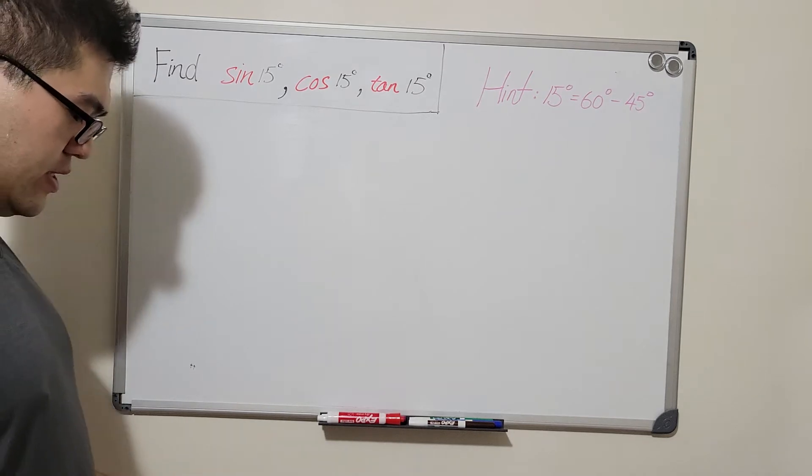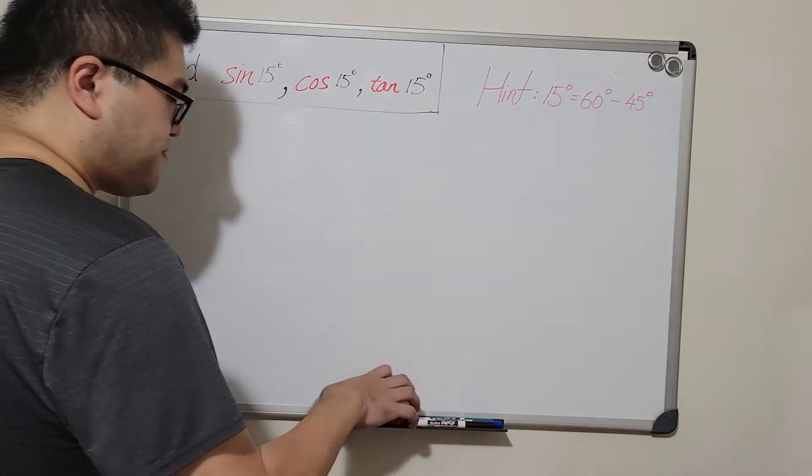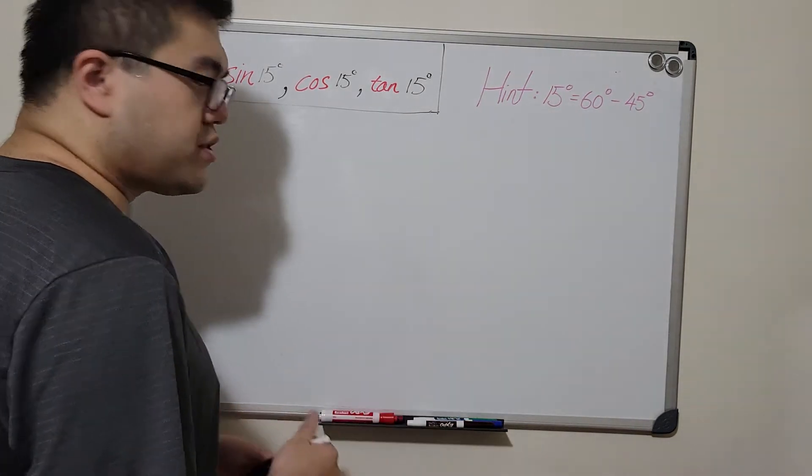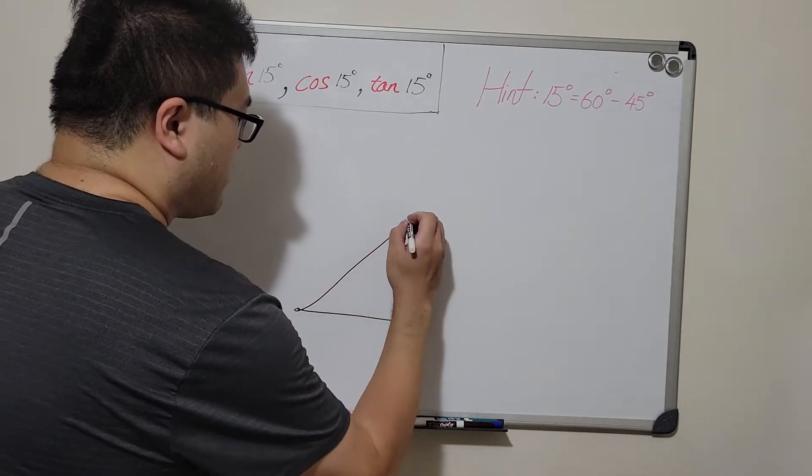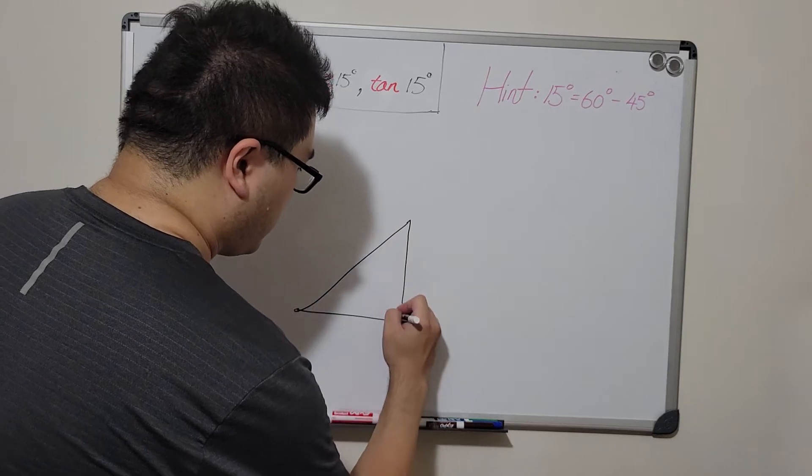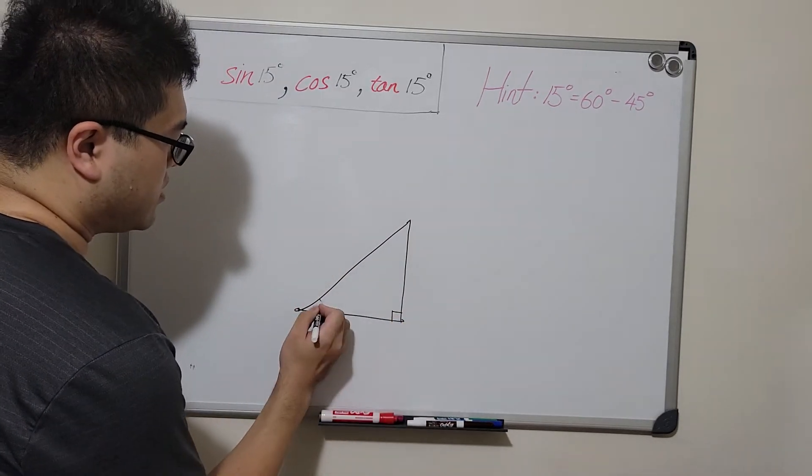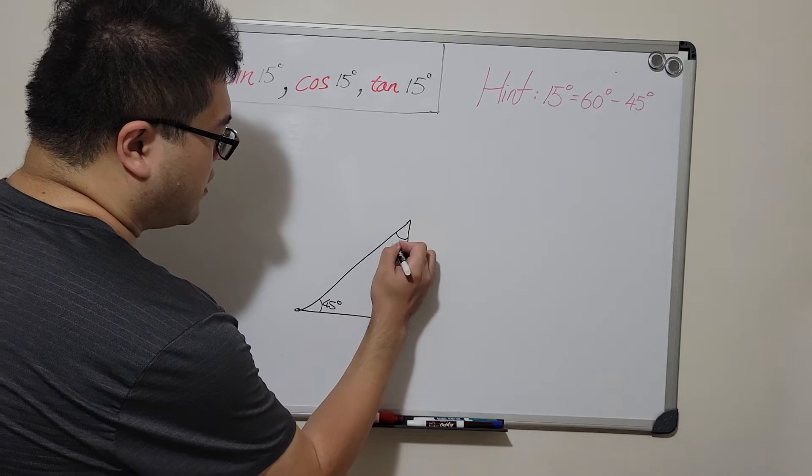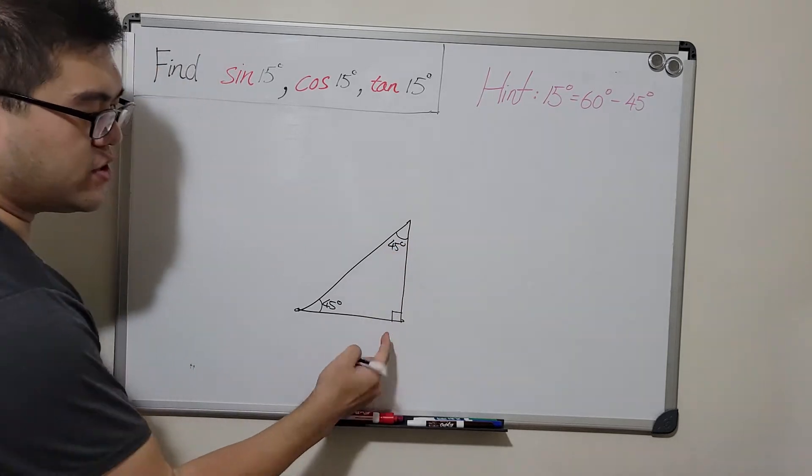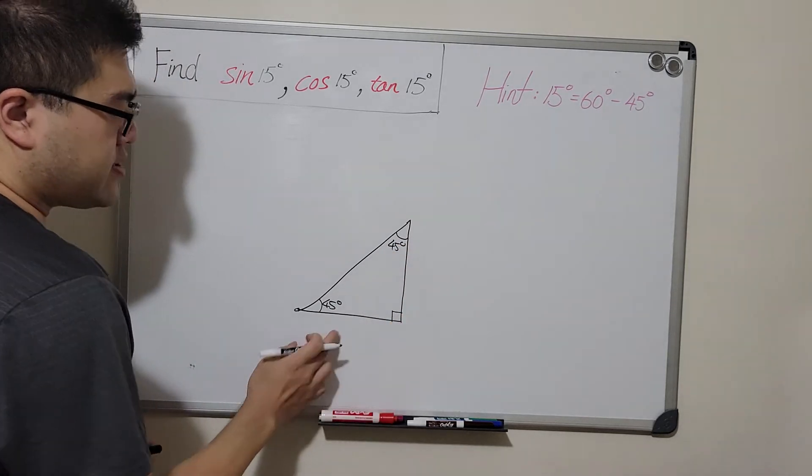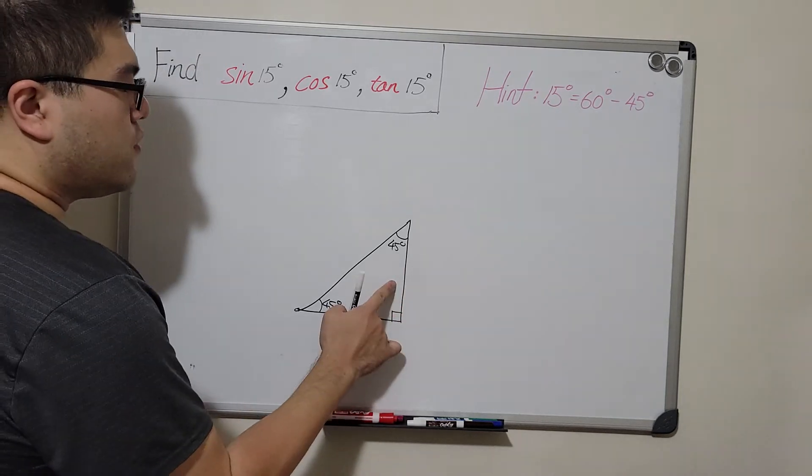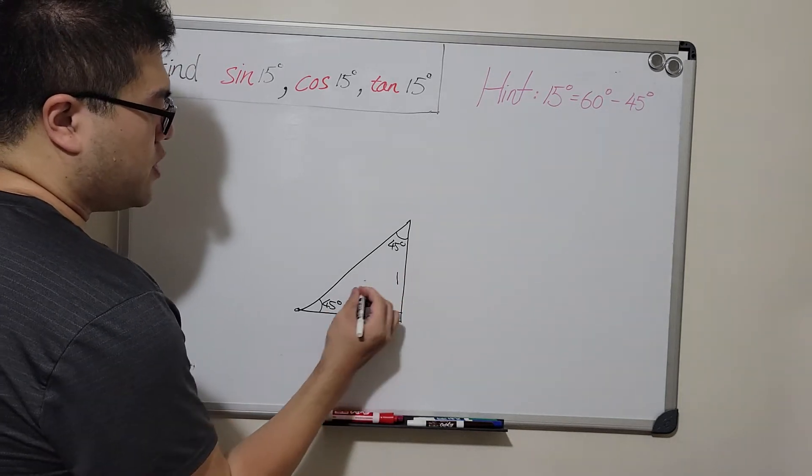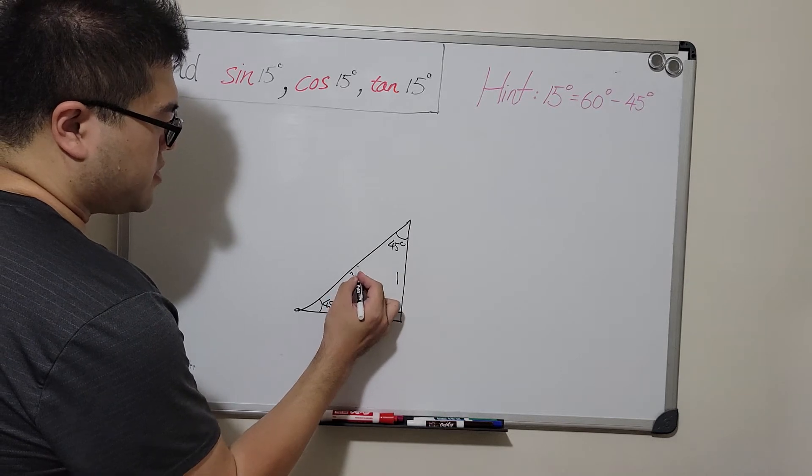So here is our approach. First, let's draw a right isosceles triangle, meaning the two angles are 45 degrees, and of course we have the right angle here. Let's call the leg down here 1, meaning that the other leg is also 1, and the hypotenuse is square root of 2.